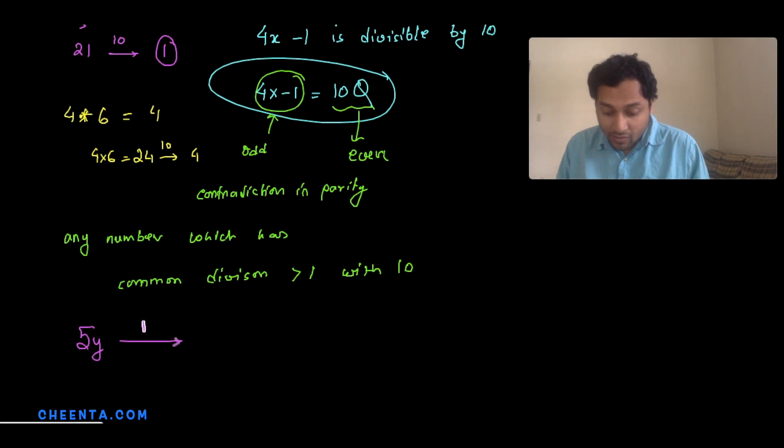Suppose y is the inverse of 5, then 5y gives a remainder of 1 when divided by 10. Now is this possible? Well again, 5y minus 1 is divisible by 10. If you remove the remainder it is divisible by 10, that equals 10 times some quotient.